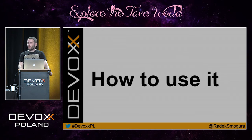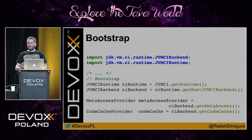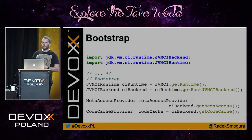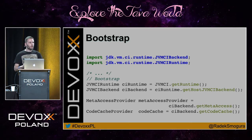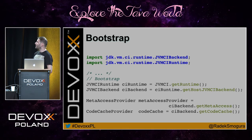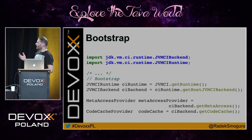I would like to show you how to use this based on my own experiments. It is a bit tricky, because you are generating machine code — not Java code. You generate machine code which you store in memory. You have to bootstrap all the infrastructure. The very simplest step is that you get a runtime, a backend, meta access, and a code cache. The code cache is the place where we are going to install the code.